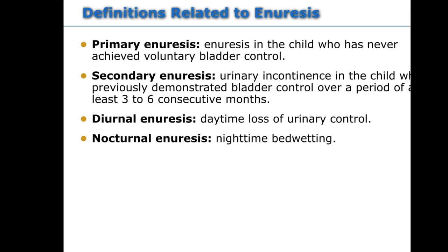Enuresis is urinary incontinence. Secondary enuresis means the child was previously continent but is no longer. Diurnal enuresis is daytime loss of urinary control; nocturnal enuresis is bedwetting at night. Both diurnal and nocturnal enuresis are often related to psychological issues.